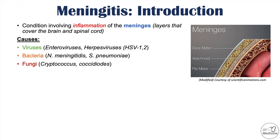Certain fungi can lead to meningitis, including Cryptococcus and Coccidioides. Some non-infectious causes of meningitis include lupus and sarcoidosis. As you can see, there are many different causes of meningitis.